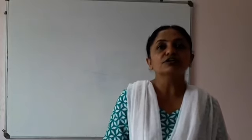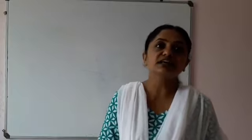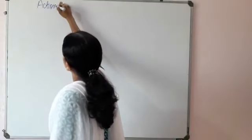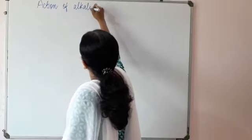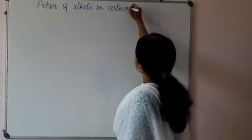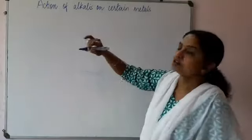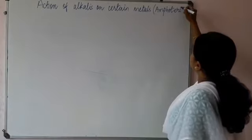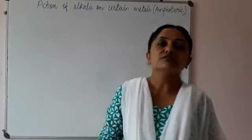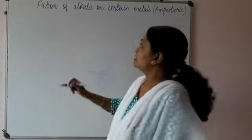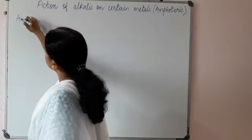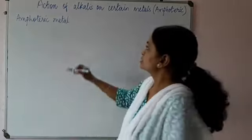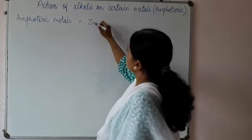Hello students. Our topic for analytical chemistry is the action of alkalis on certain metals. This is an important topic, also called amphoteric metals. Here we use the word amphoteric in nature. In our syllabus, there are three amphoteric metals: zinc, aluminium, and lead.